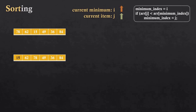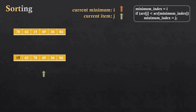For the second iteration, the current minimum and current item will start from index 1. The current item will move forward and find the minimum value. If the current item is still larger, the current minimum will not be updated. When the current item is smaller than the current minimum, the current minimum will be updated. The current item moves forward again; again it is smaller than the current minimum. The current item continues to the last index, and the minimum value found in the second iteration is 36.